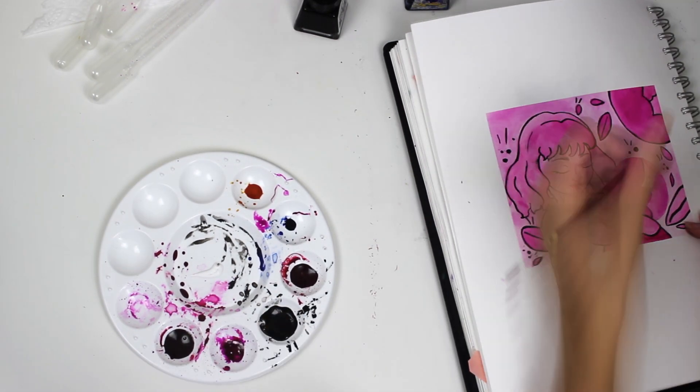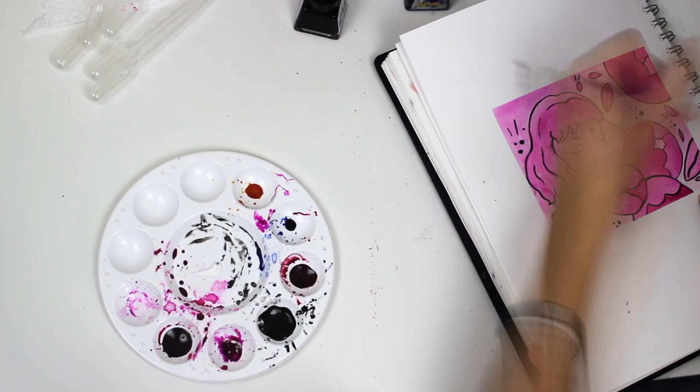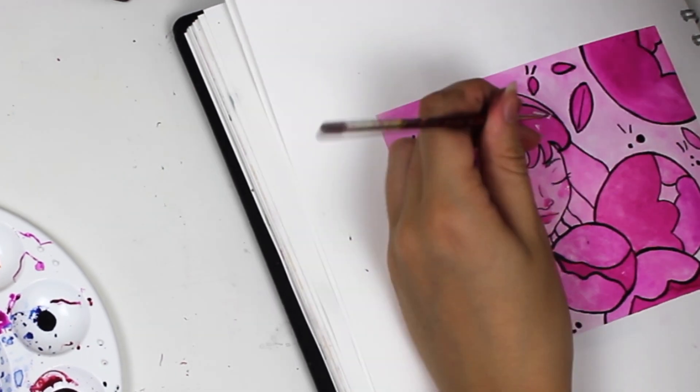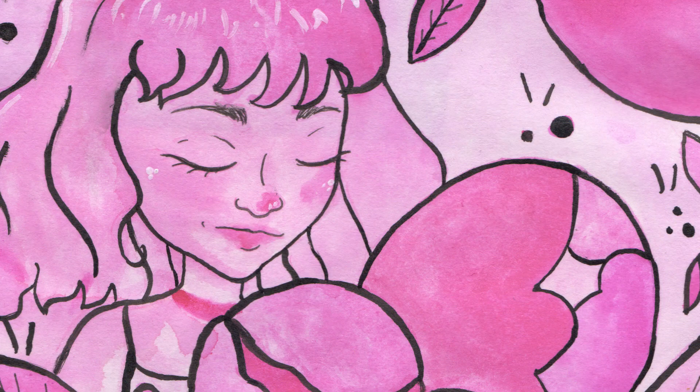Then I pulled off the washi tape—and I did forget to color in the outline of this flower—but I finished it off and I used some white acrylic paint to add in some more details like I did for the penguins.